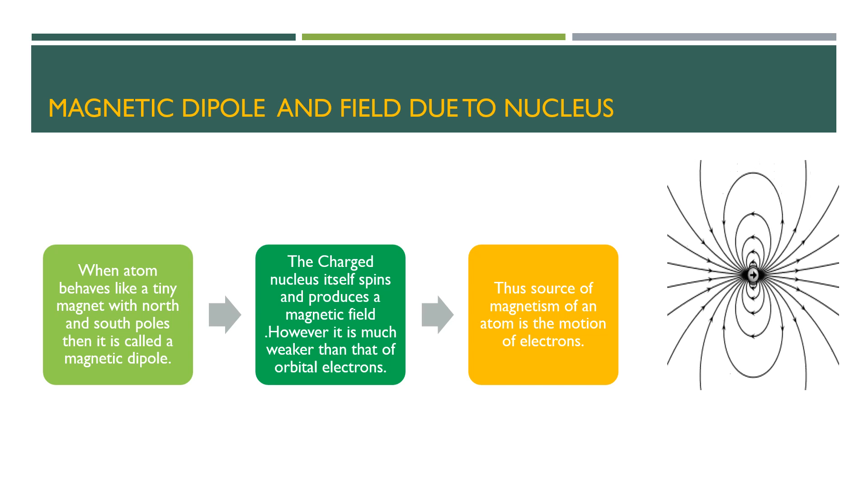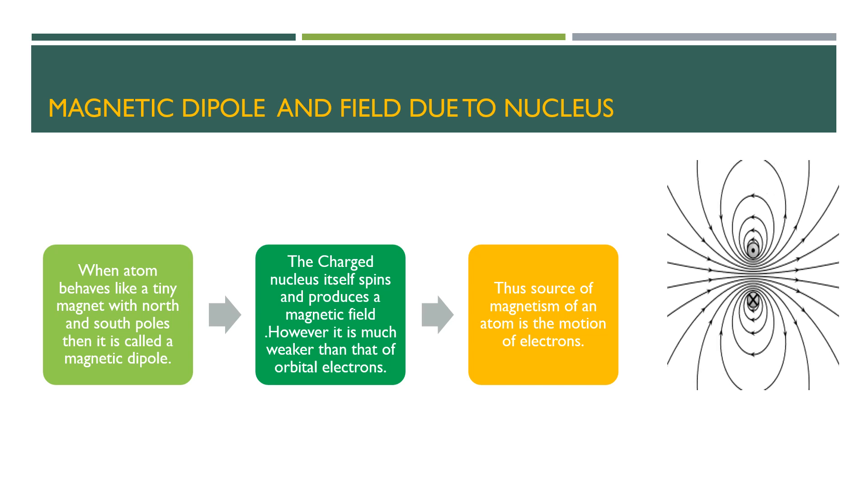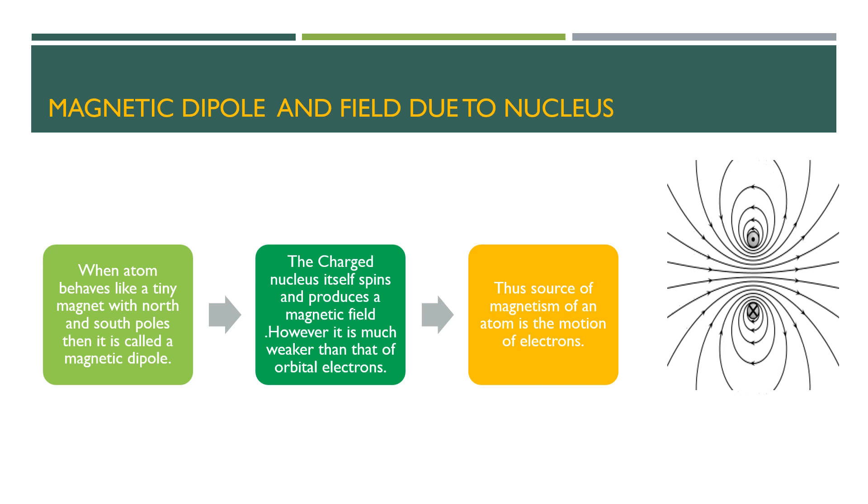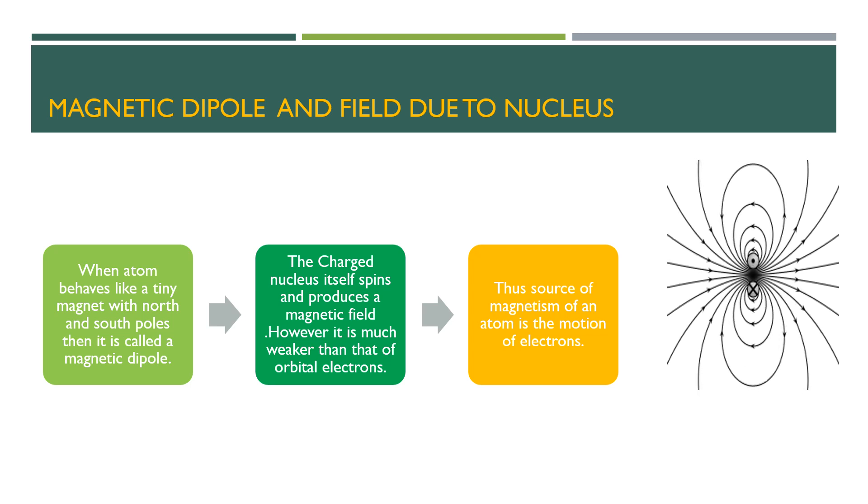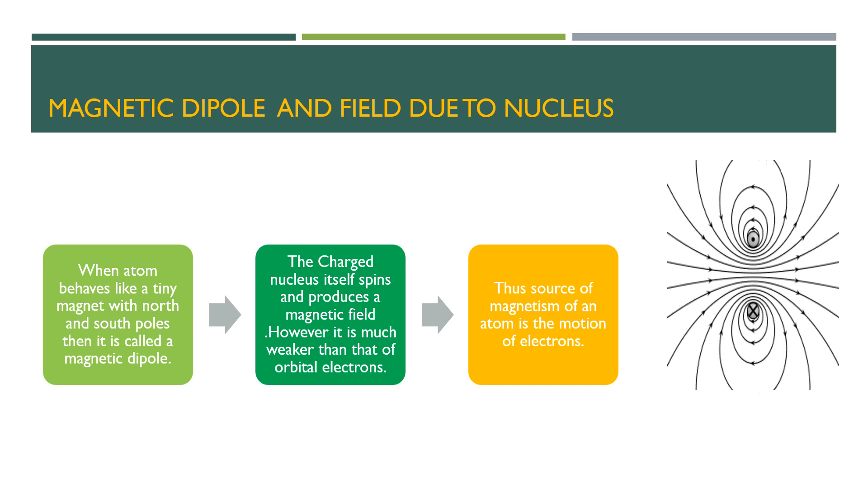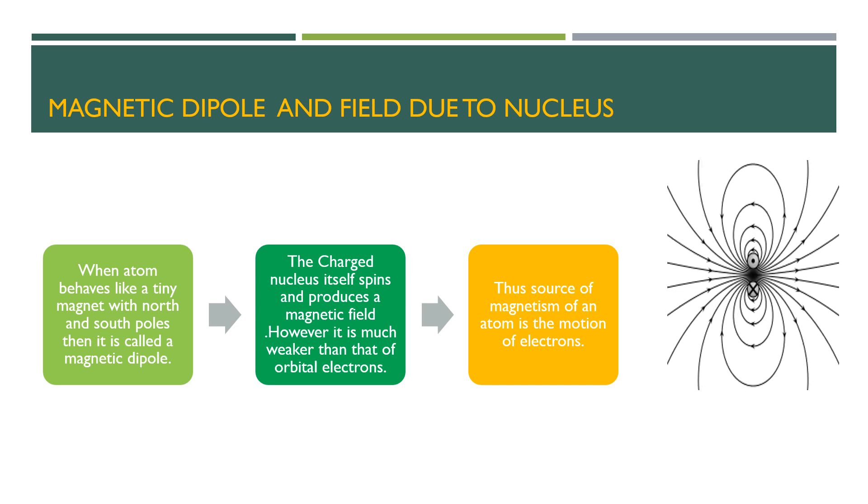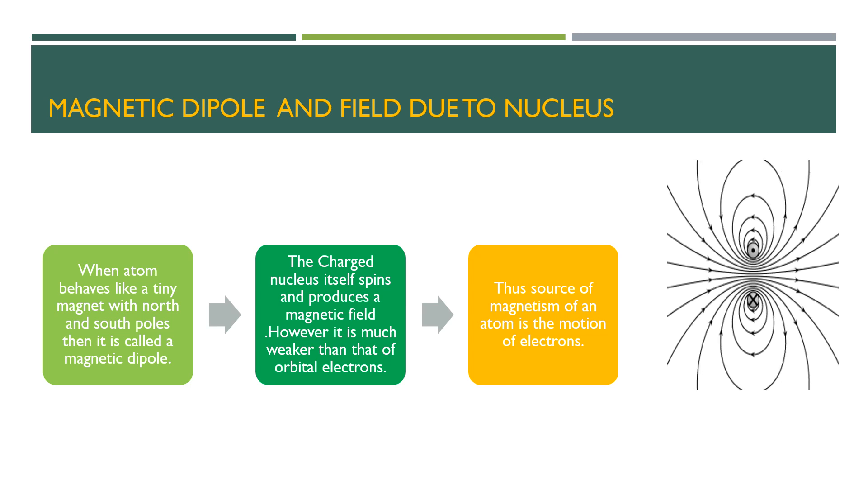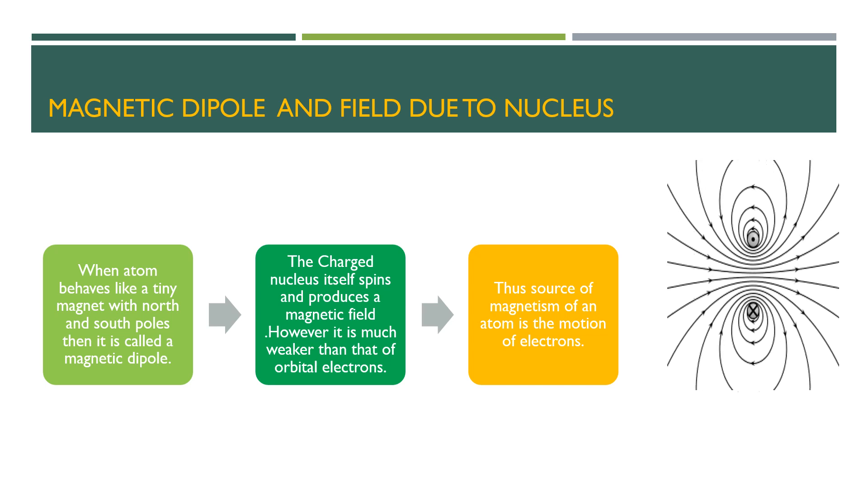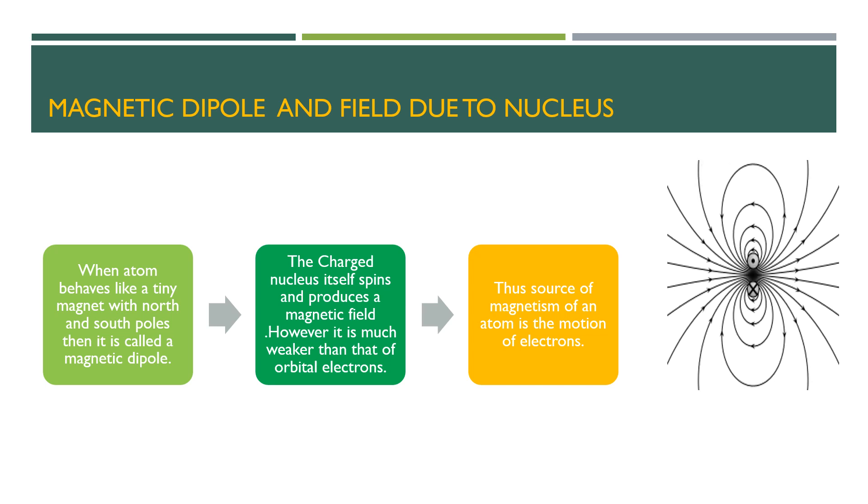The charged nucleus itself spins, giving rise to a magnetic field; however, it is much weaker than that of the orbital electrons. Thus the main source of magnetism of an atom is the motion of its electrons. Accepting this view of magnetism, it is concluded that it is impossible to obtain an isolated north pole.